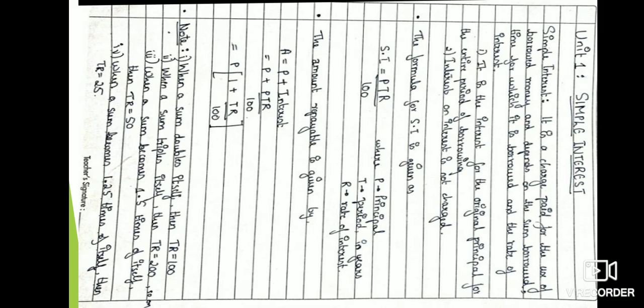The formula for simple interest is: SI = PTR / 100, where P is principal, T is period in years, and R is rate of interest. Please remember this formula for simple interest: PTR by 100.